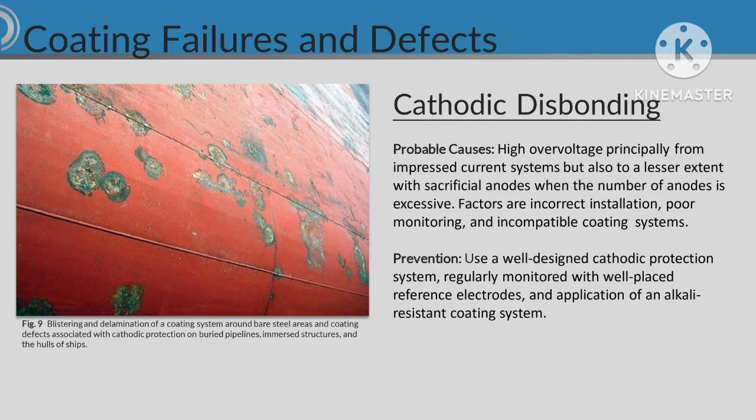Cathodic Disbonding. Probable causes: high overvoltage principally from impressed current systems, but also to a lesser extent with sacrificial anodes when the number of anodes is excessive. Factors include incorrect installation, poor monitoring, and incompatible coating systems. Prevention: use a well-designed cathodic protection system, regularly monitored with well-placed reference electrodes, and application of an alkali-resistant coating system.